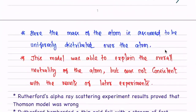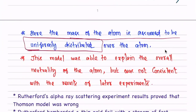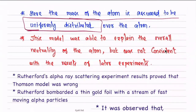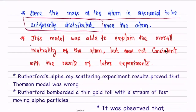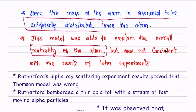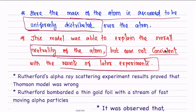The mass of the atom is assumed to be uniformly distributed over the atom — the mass is distributed uniformly in the sphere. This model was able to explain the overall neutrality of the atom: the positive charge and the negative charge are equal. But it was not consistent with the results of later experiments, which is why scientists continued to research. After that, another experiment provided proof.